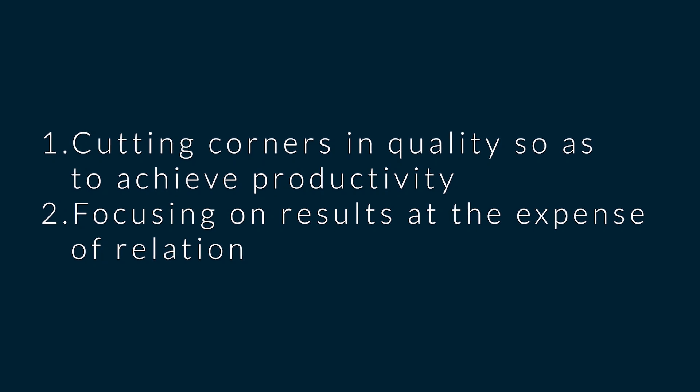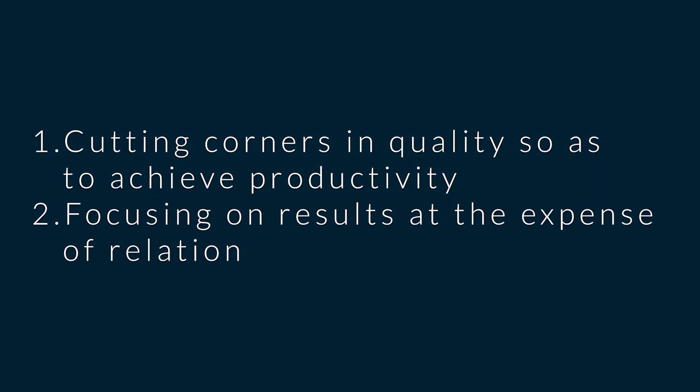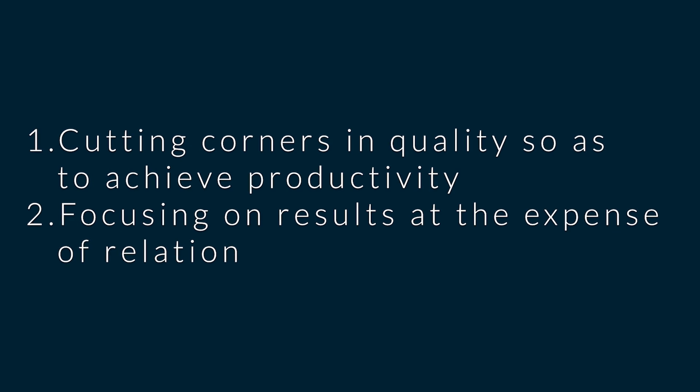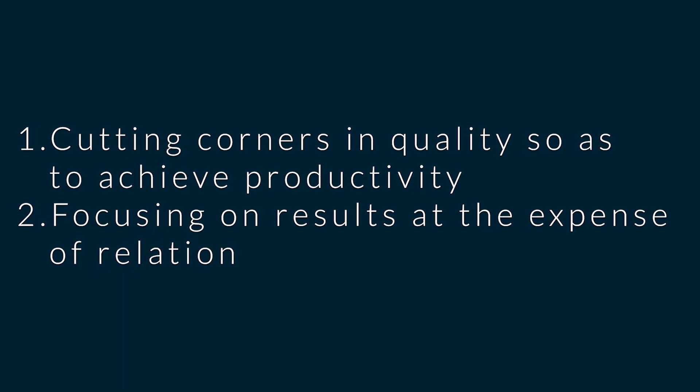KPIs also have setbacks. Problems can include cutting corners in quality so as to achieve productivity targets, or focusing on results at the expense of the relationship. For example, a supplier wanting to meet a 95% on-time delivery rate might rush deliveries and end up delivering goods that are not up to standard.